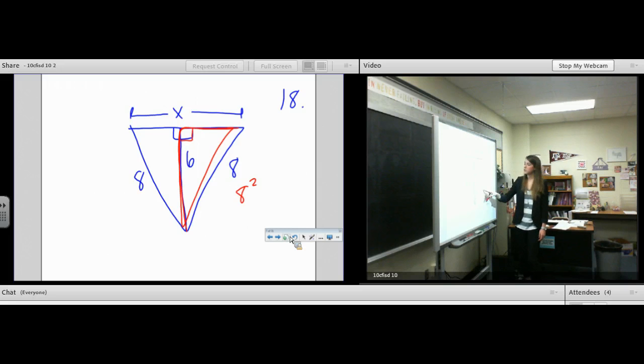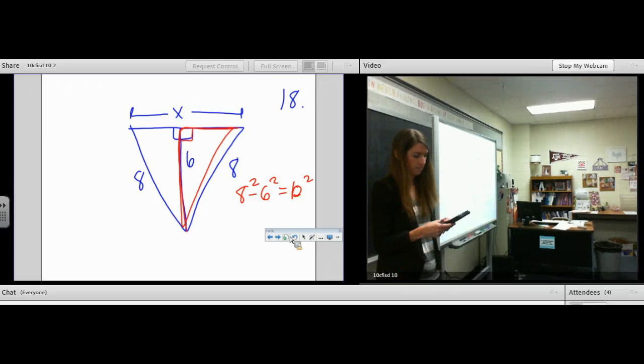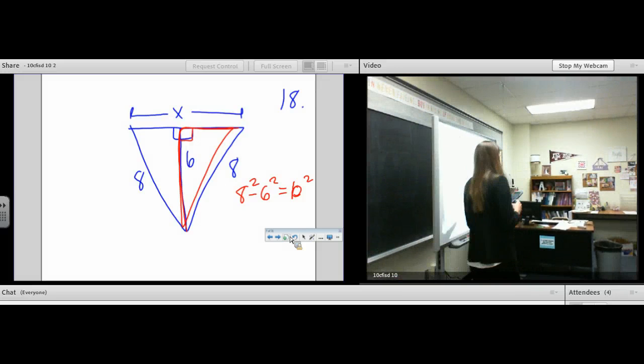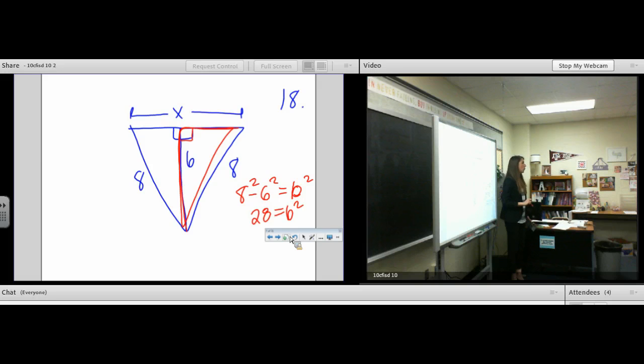We do C squared minus A squared. Well, B, A squared. 8 squared minus 6 squared. That's our radicand. How come I beat all of you, and I have to walk over there to get my calculator? 28 is B squared. We don't want B squared. We want B.